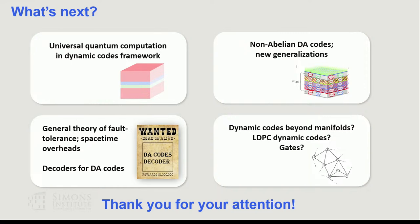The open questions include: achieving universal quantum computation and hopefully making it practical; nailing down bounds on space-time overheads and the general landscape of what's possible with different phases; non-Abelian DA codes, which definitely have many interesting instances; and — topical to this workshop — hopefully producing LDPC versions of dynamic codes and extending some of this to LDPC settings.